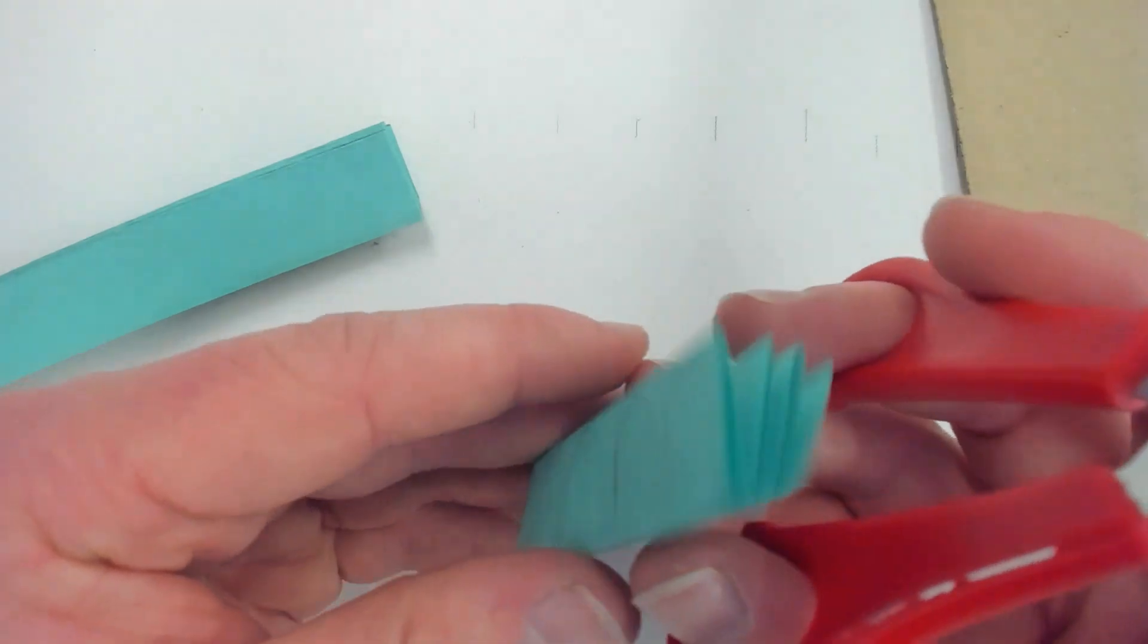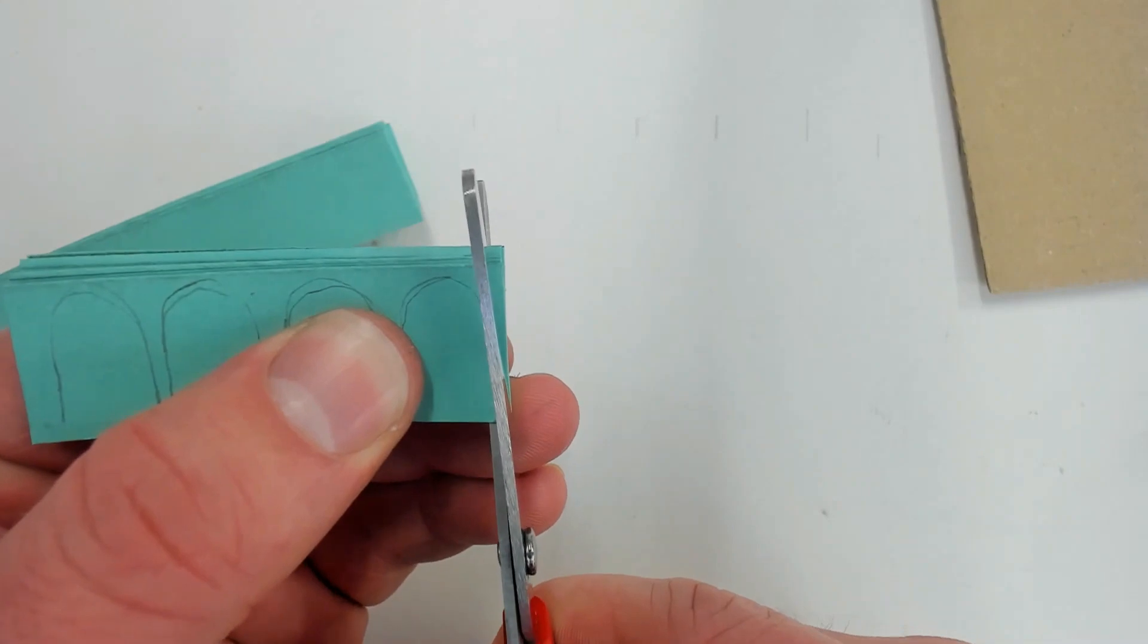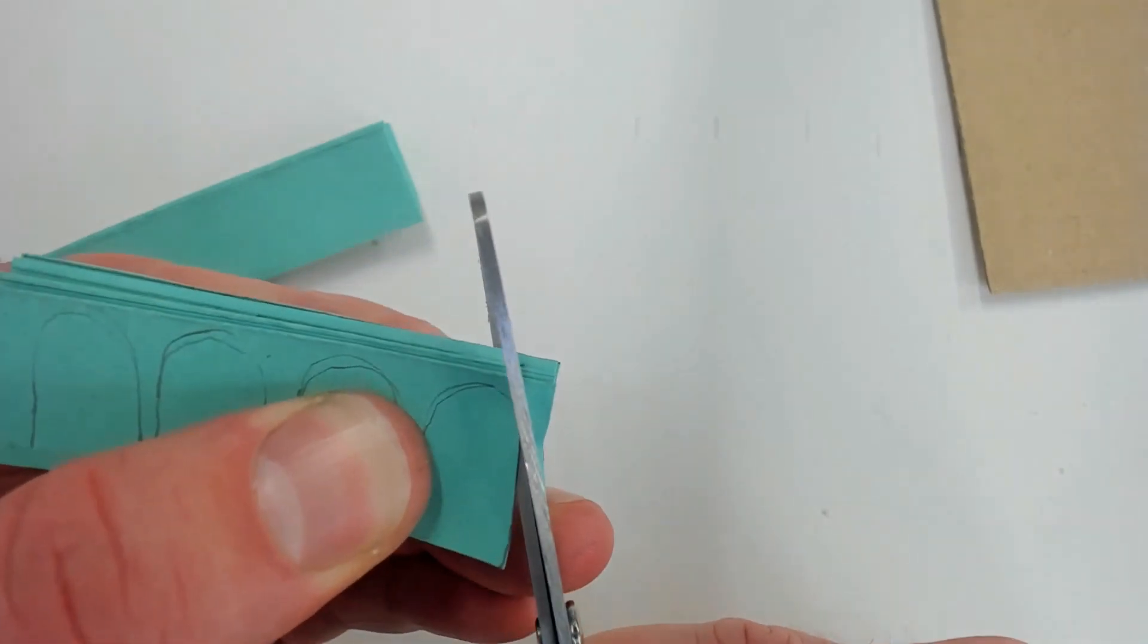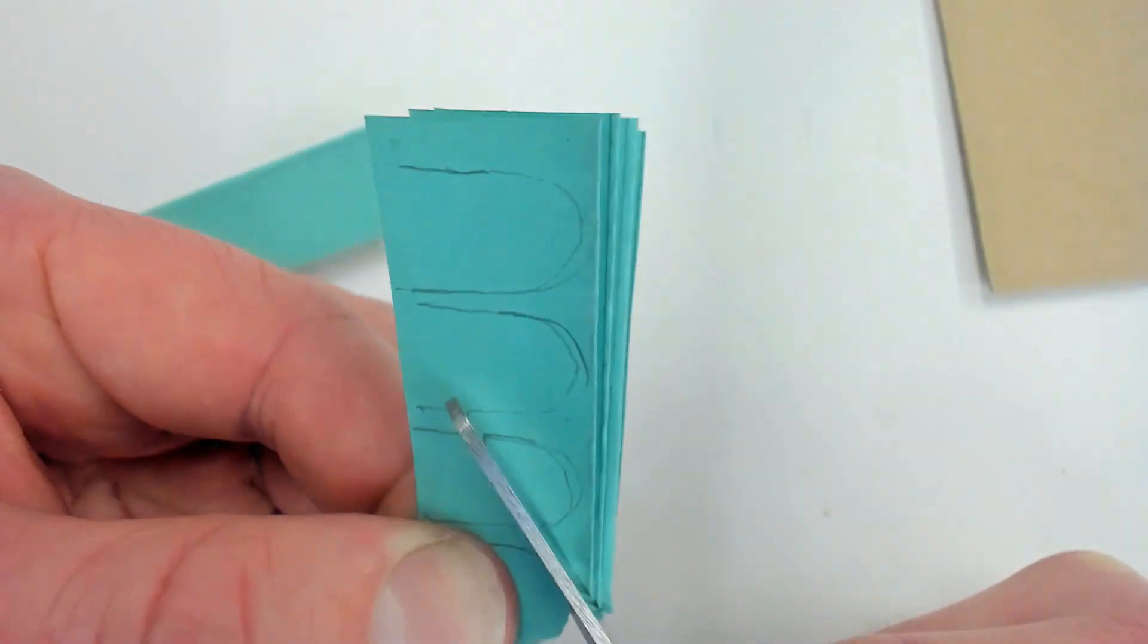Because we've got all these corrugated cards together, we can cut around this shape and we should end up with four or five scales depending on how many folds you've done, that drop out in one.